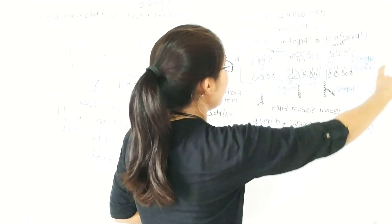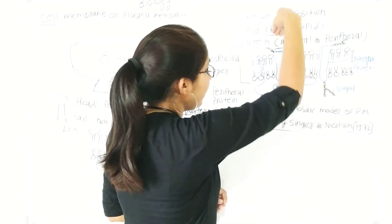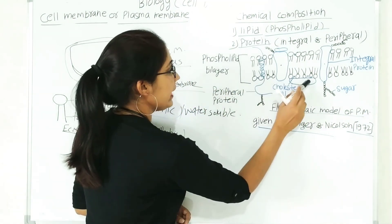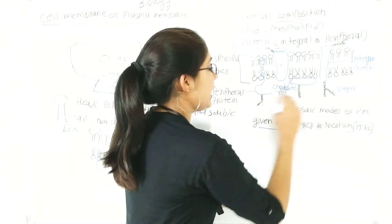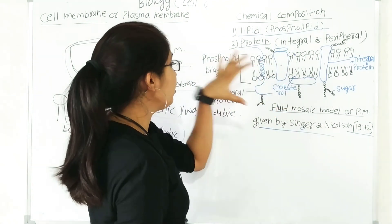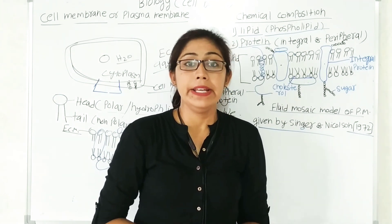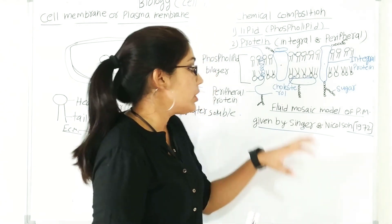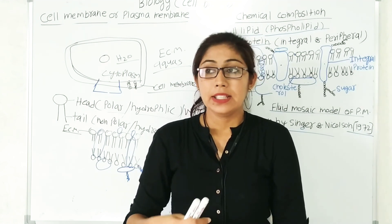This is the structure of the fluid mosaic model. This is the lipid bilayer structure. Some integral proteins are completely embedded inside the plasma membrane. Some proteins are peripheral proteins, present on the periphery of the membrane. There is also sugar or cholesterol present inside the plasma membrane. So the fluid mosaic model, given by Singer and Nicolson, states that the plasma membrane is made up of a phospholipid bilayer, integral and peripheral proteins, some amount of cholesterol, and carbohydrate moieties.